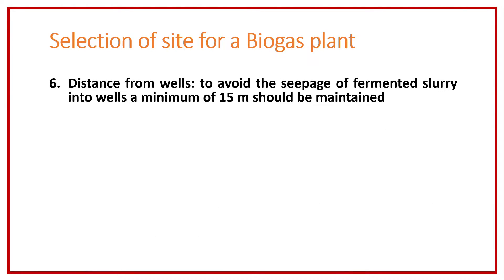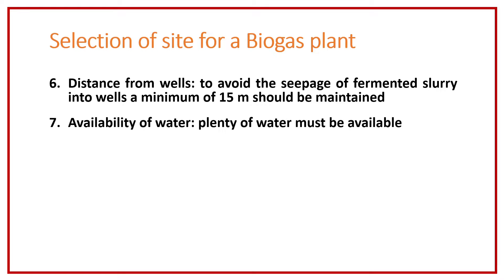Next is distance from the wells. In the digester we are feeding waste materials like cow dung etc., so there may be chances that it may seep from the digester into the well water and contaminate it. To avoid contamination, a minimum distance of 15 meters should be maintained to prevent seepage from the digester to the well water.